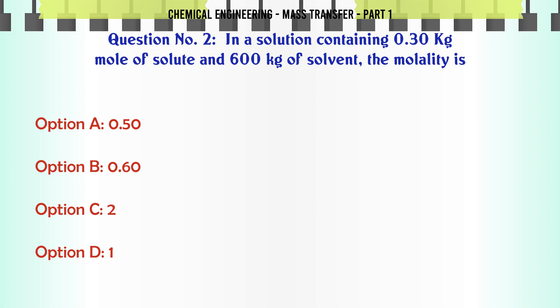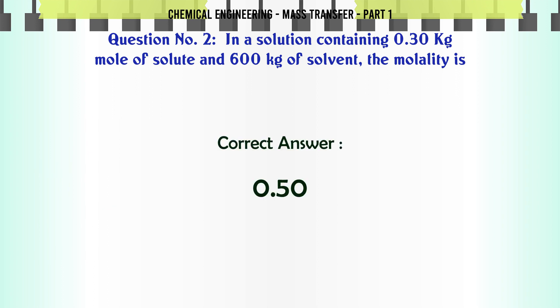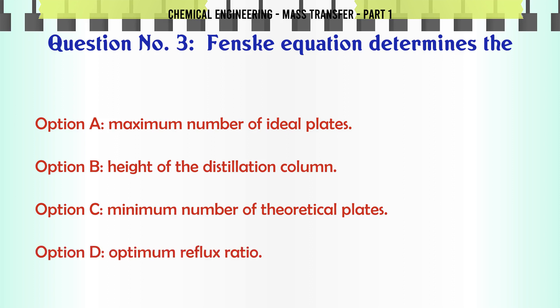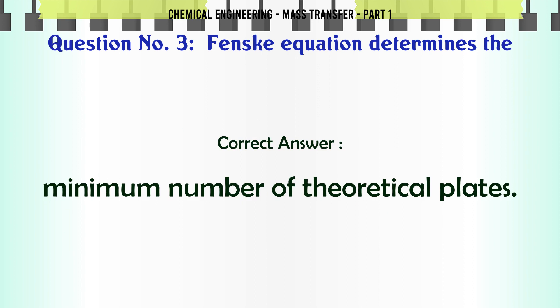Fenske equation determines the: A. Maximum number of ideal plates. B. Height of the distillation column. C. Minimum number of theoretical plates. D. Optimum reflux ratio. The correct answer is Minimum number of theoretical plates.